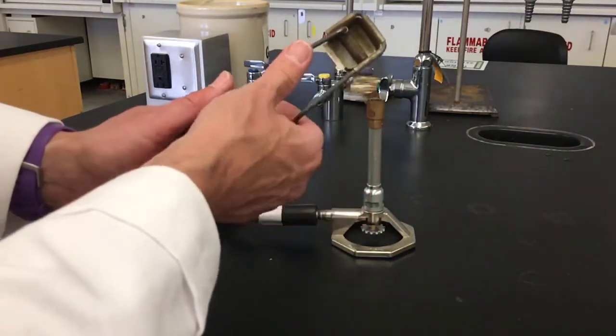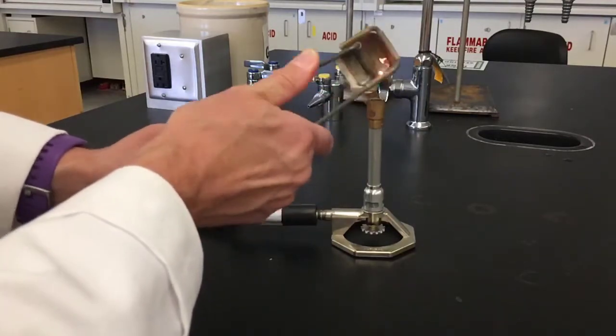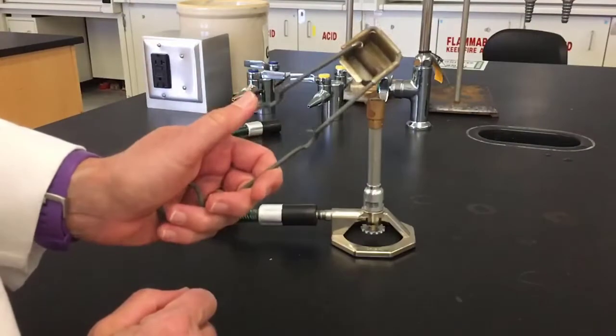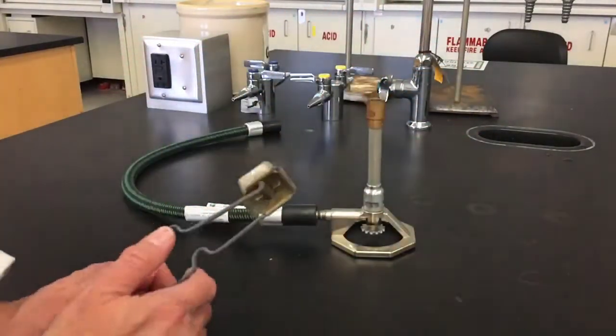You need to apply pressure with your thumb on the flint across the metal textured surface. If you can produce a spark, that'd be great. It's best to practice this before you try to light the Bunsen burner flame.